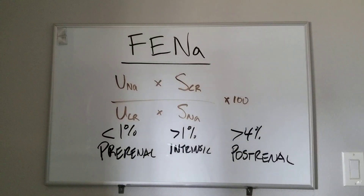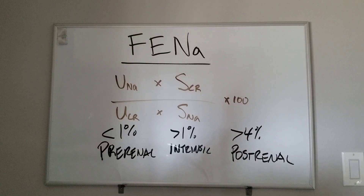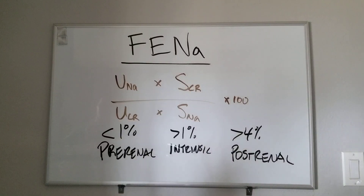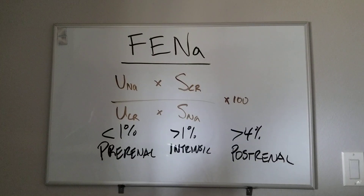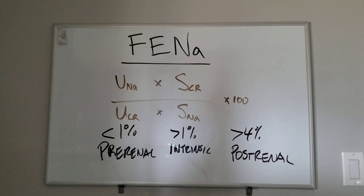One thing to talk about is the limitations of FENa: if a patient is on diuretics — which a lot of sick people, especially nephro patients, are — it makes this scoring system a bit wonky. It artificially changes the numbers. So you should use a fractional excretion of urea, FEUr, which we have a different video on. It's going to be very similar to this one.